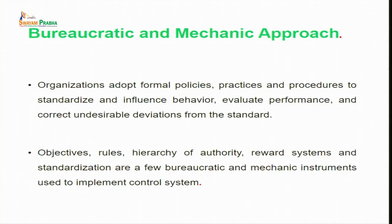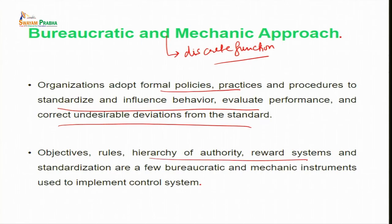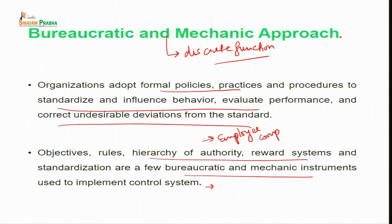The bureaucratic and mechanic approach considers control as a discrete function of management. Organizations adopt formal policies, practices and procedures to standardize and influence behavior, evaluate performance and correct undesirable deviations from standards. Objectives, rules, hierarchy of authority, reward system and standardization are examples of bureaucratic and mechanic instruments used to implement control systems. Employee compliance is the most important thing in the bureaucratic approach — compliance to rules is extremely important.